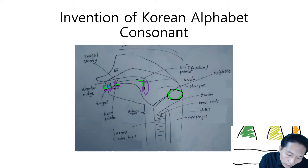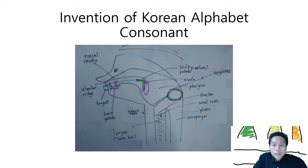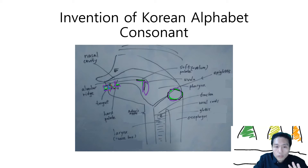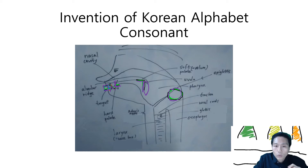Let's look at 이응. 이응 is positioned at the throat, so we call it a guttural sound. So there are five types of sounds created by King Sejong, based on the shape of the tongue, lips, teeth, or throat.